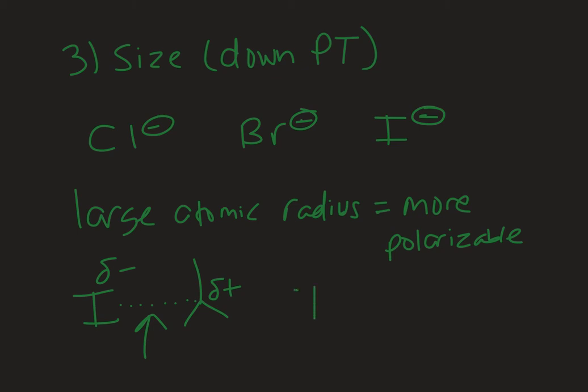So if we think about an iodine or an iodide, it's just a sphere, right? So the atomic radius, it looks like one big sphere. As the iodide gets close to the electrophile, the electrons will start to shift because they feel the attractive force of that partial positive.